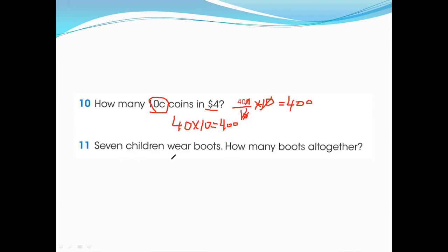Question eleven: seven children wear boots. One boot means two because we have two feet, so two boots for each child. How many boots altogether? Seven multiplied by two — seven twos are 14. So there are 14 boots altogether.